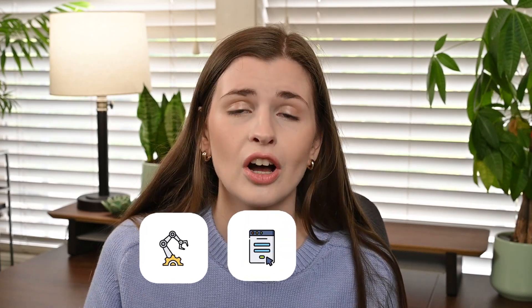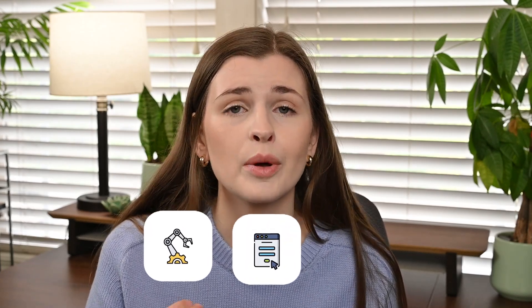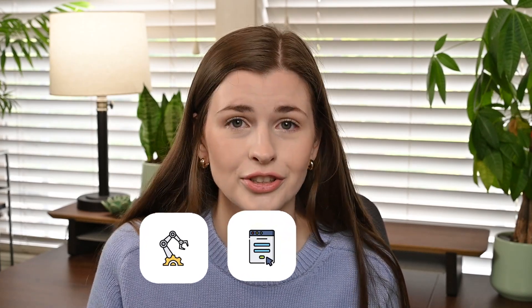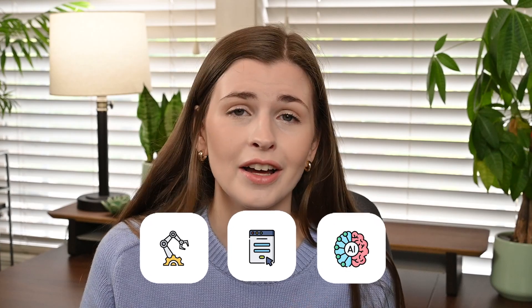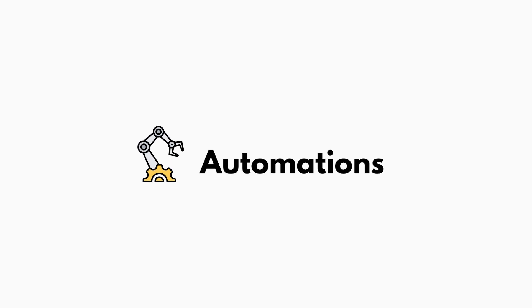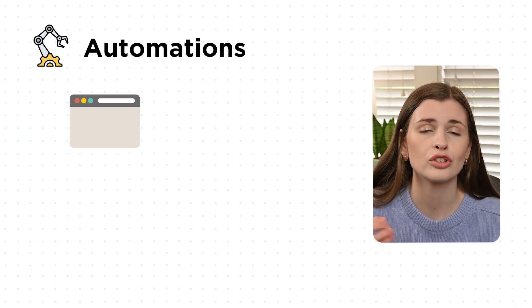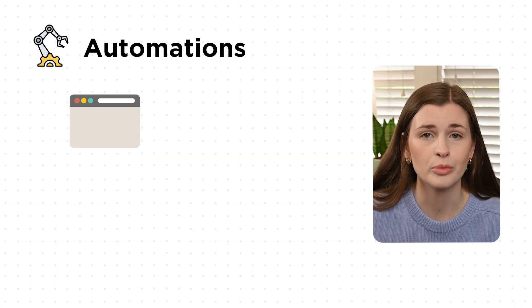The first feature we'll go over is called automations — automating tasks. Next, we'll go over templates, which is automating very repetitive messages. And finally, AI reply, which is using AI to write for you. Let's start with automations, which is essentially making automations straight in your web browser.